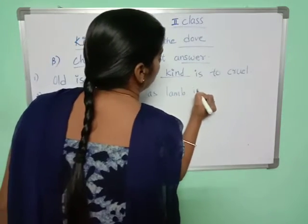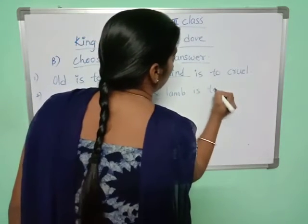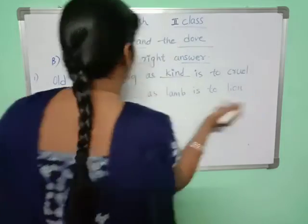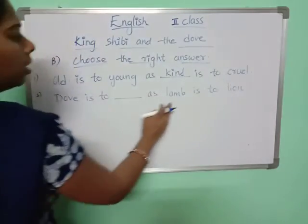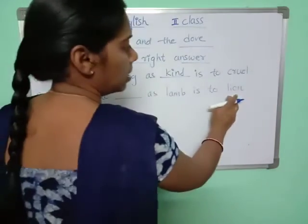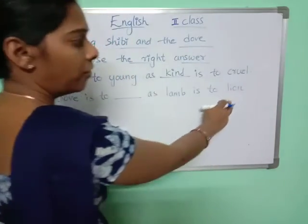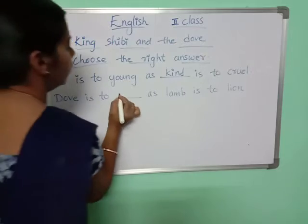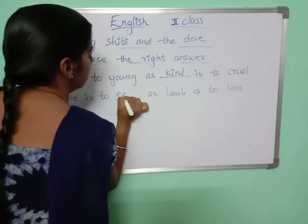Lamb is to lion. Lamb is a prey of lion, so dove is a prey of eagle.